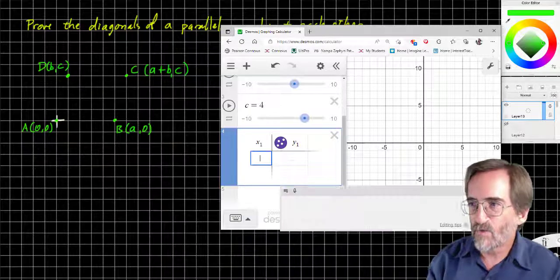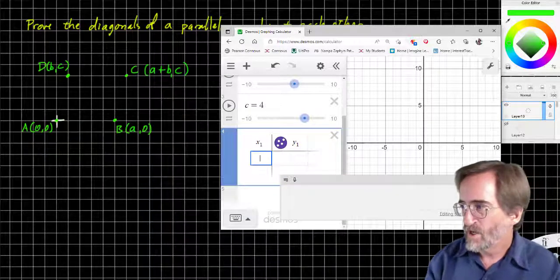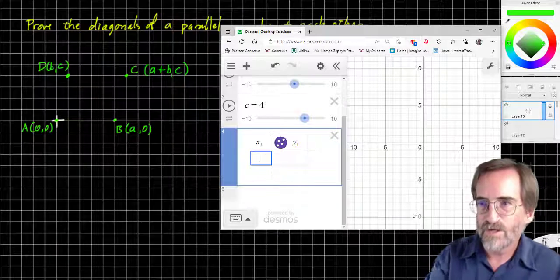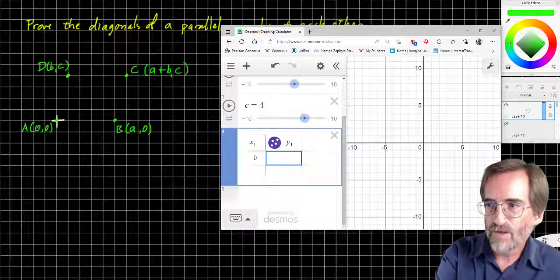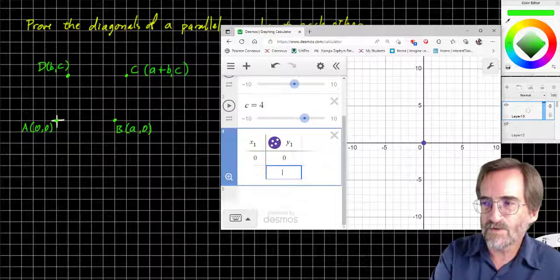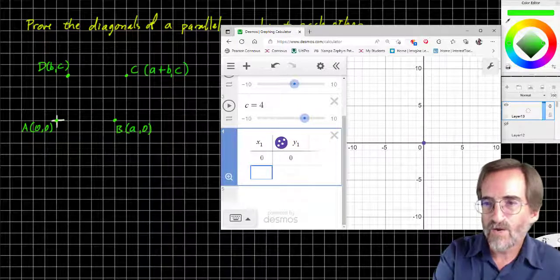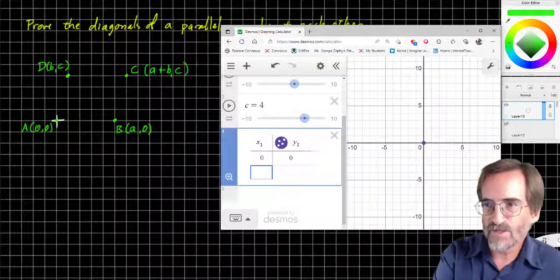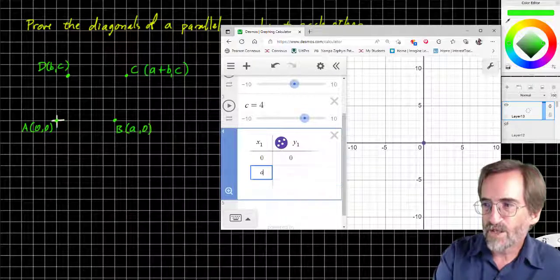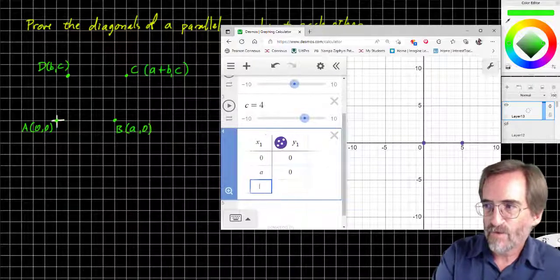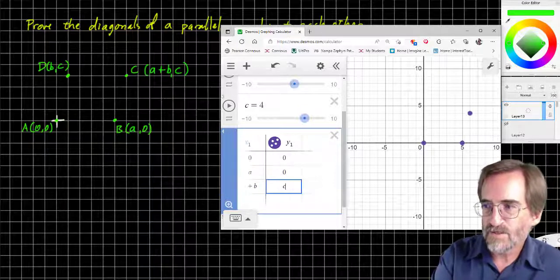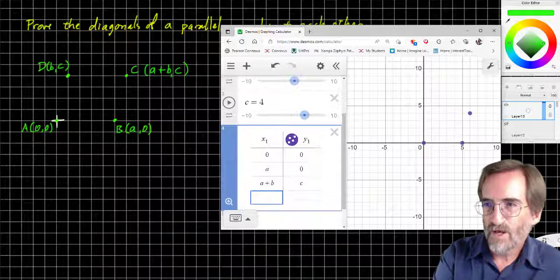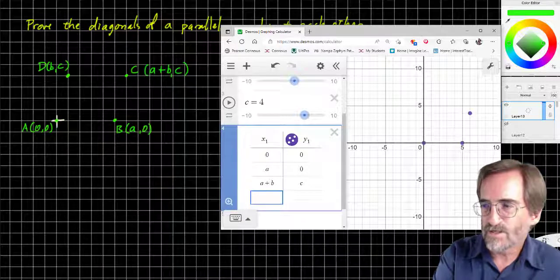And we're going to now, instead of putting ones and fives and fours, I'm gonna put the coordinates here. A is zero, zero. Now notice I'm not substituting zero, zero. Because we're anchoring the graph to zero, zero. That's not gonna move. B is a zero. C is a plus b and c. And capital D, point D is bc.